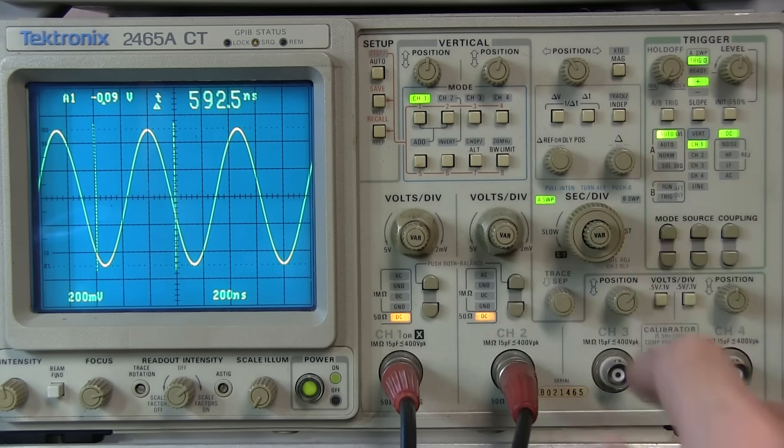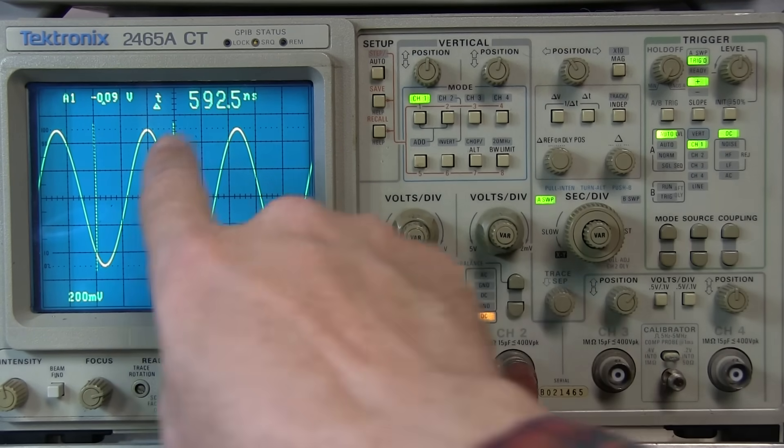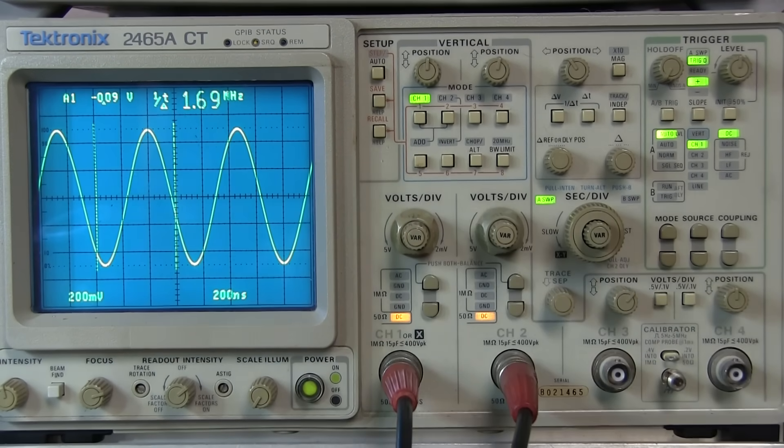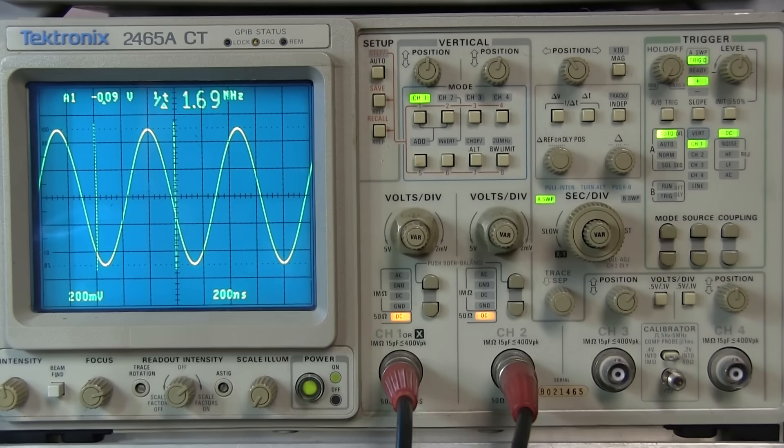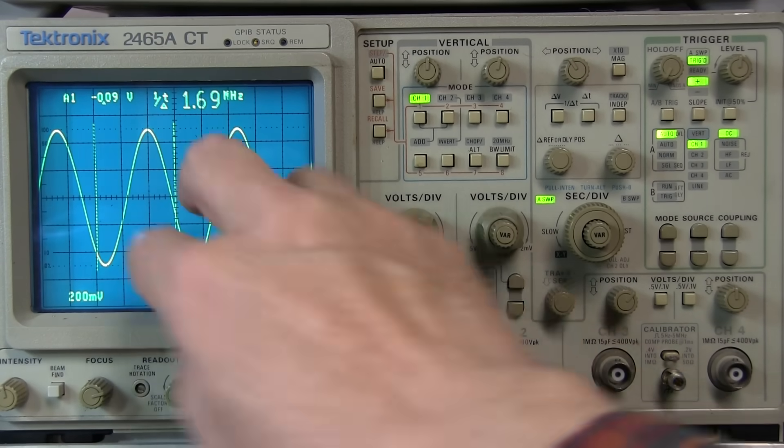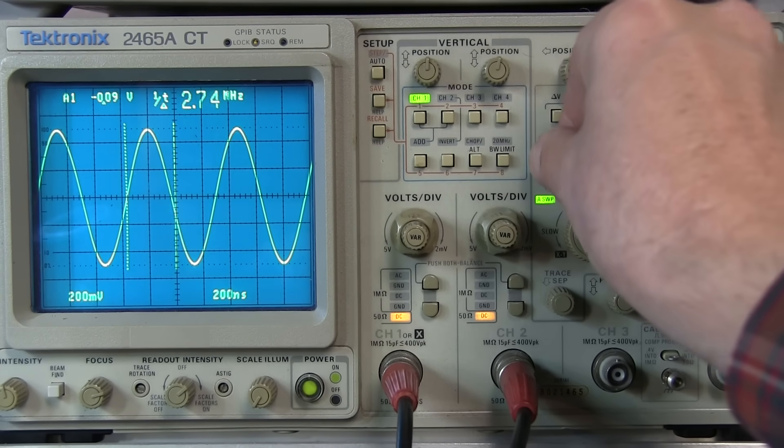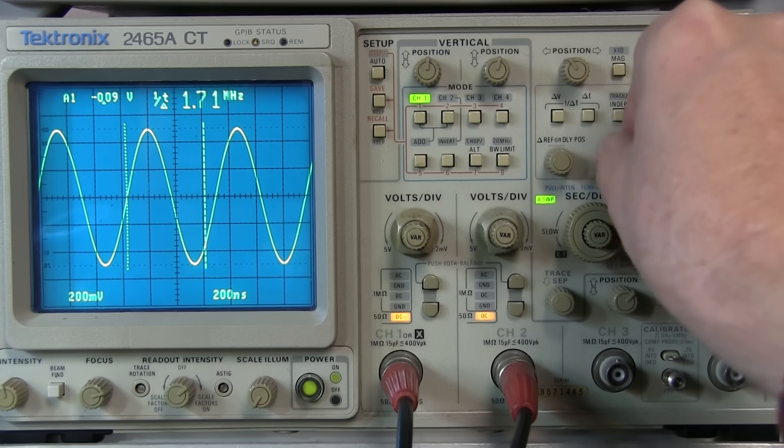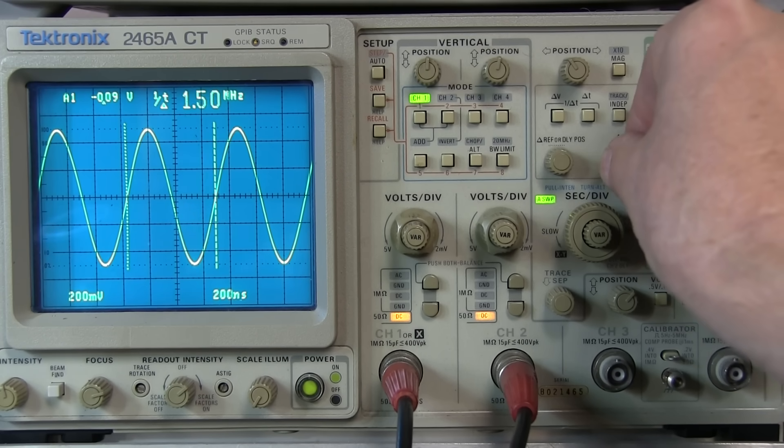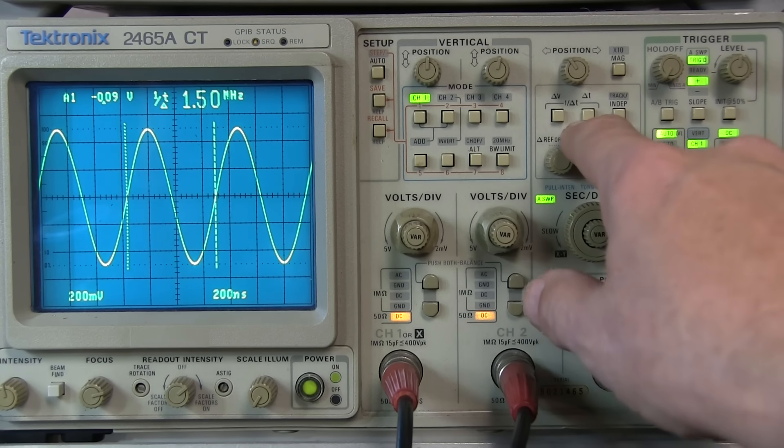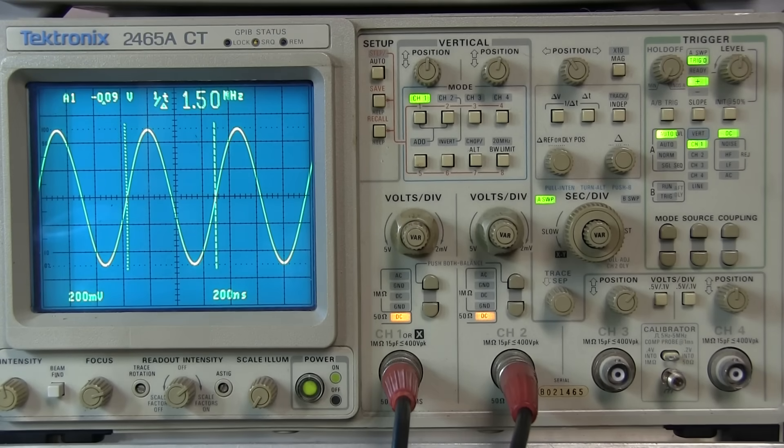Now, pushing both the delta V and delta T buttons at the same time will convert this from a delta T measurement to a 1 over delta T measurement. There we go. So now it's 1 over delta T. So it's basically taking the delta time between those two and inverting it, which is essentially showing me frequency. So, for example, if I look, say, at the first zero crossing of this waveform here and bring this to the second zero crossing, I can see that this is reporting a 1.5 megahertz frequency of that sine wave, which is exactly what I have my signal generator set to. So the delta T and 1 over delta T are basically using the same vertical cursors, but just a different set of math.